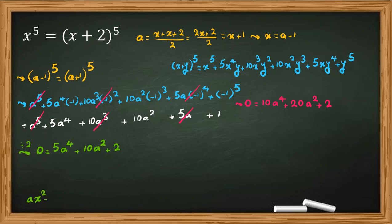Now we know that if ax squared plus bx plus c equal to 0 by quadratic formula x equal to negative b plus minus square root of b squared minus 4ac all over 2a. So here we can say it is a quadratic equation in terms of a squared.